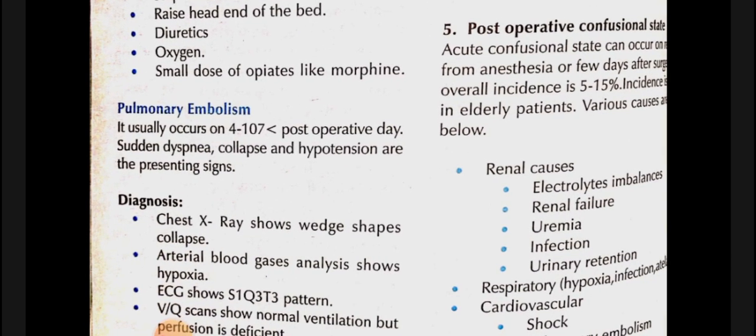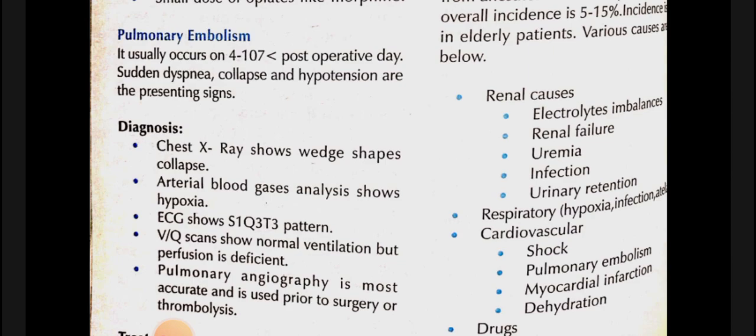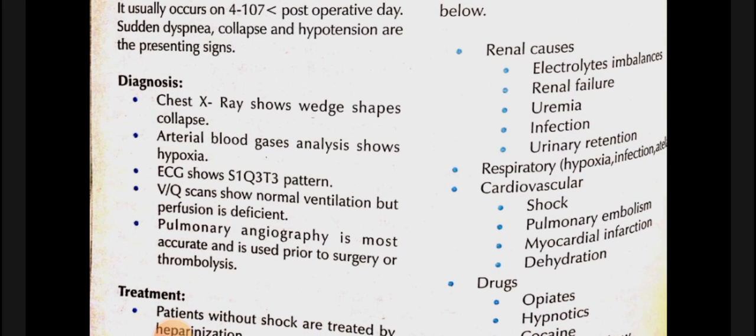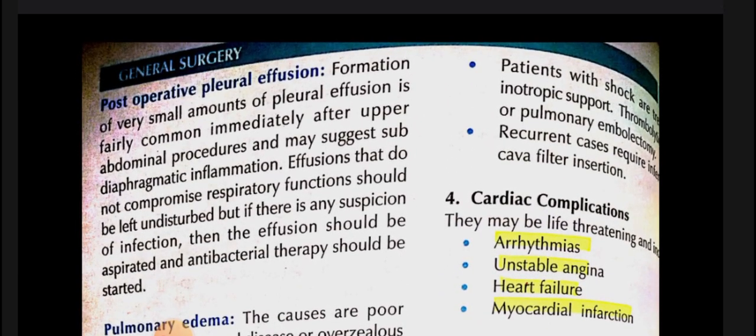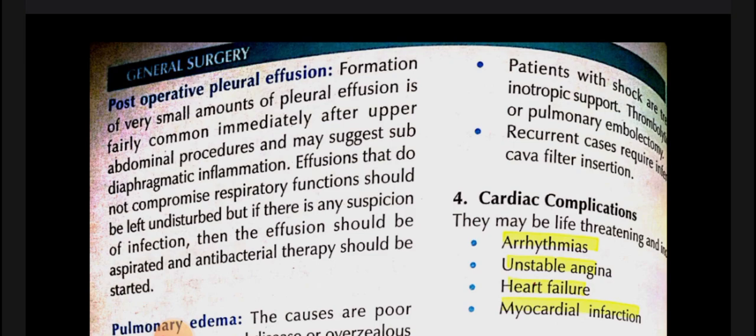Pulmonary embolism occurs on post-operative days and presents with sudden dyspnea, collapse, and hypotension. Diagnosis is by chest X-ray, ABGs, ECG, ventilation-perfusion scan, and pulmonary angiography (most accurate). Treatment: if no shock, give heparin. If in shock, add inotropic support, thrombolysis, or pulmonary embolectomy. In recurrent cases, place an IVC (inferior vena cava) filter to prevent recurrence.